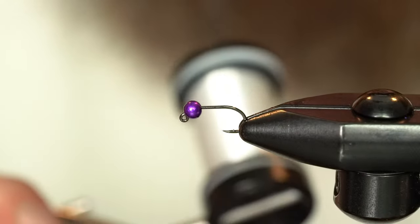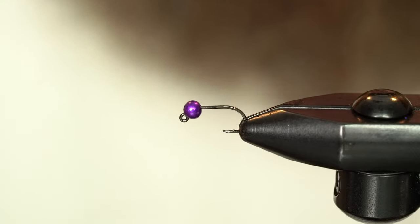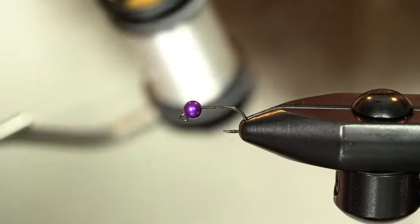In the vise we got an Ahrex FW 554 jig hook. This is a size 16. It does have a little micro barb on there so make sure you pinch it. For thread, got some NanoSilk, this is the 50 denier.